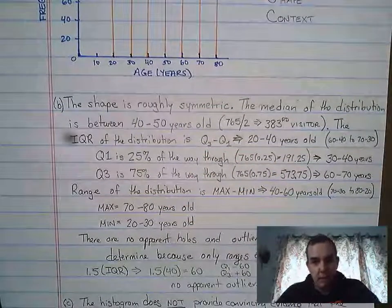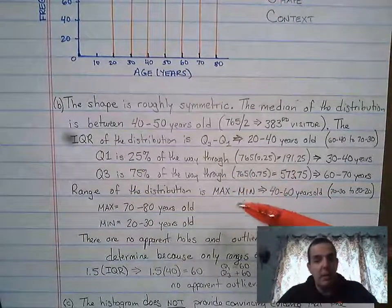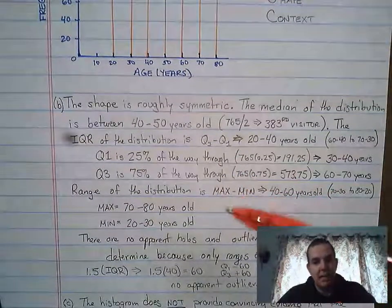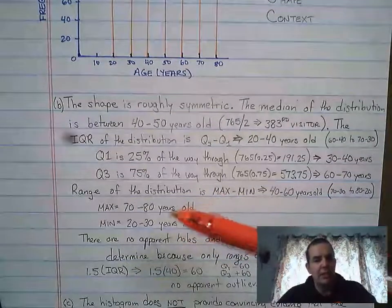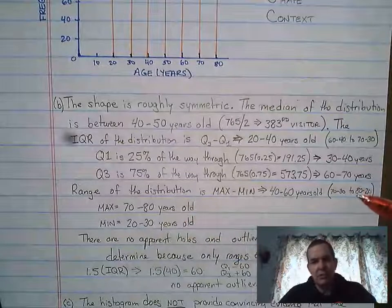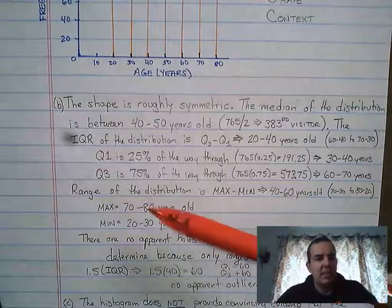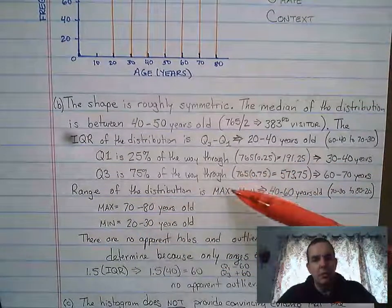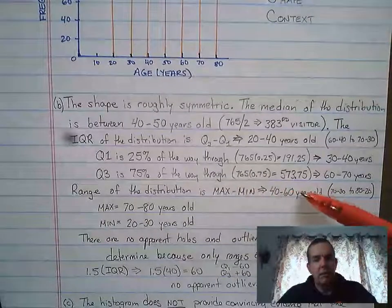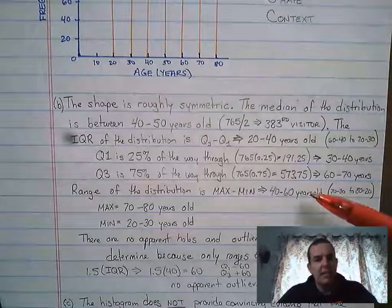In this case, I'm going to go ahead and use range for the measure of spread. And the range is max minus min. Again, it's a number, not like a two thing. It's not 20 to 30 years old to 70 to 80 years old. You actually need to go ahead and do the subtraction. And the subtraction is kind of small here. The way you're going to figure it out is you're going to go ahead and subtract the inside numbers, the 30 and the 70, the outside numbers, the 20 and the 80, which is going to give you a range of 40 to 60 years old. Another chance to hit context.